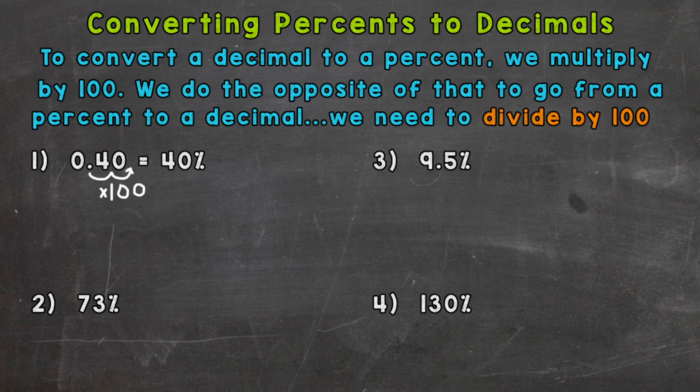Now, when we convert a decimal to a percent, we multiply by 100. We do the opposite of that to go from a percent back to a decimal. So we need to divide by 100.